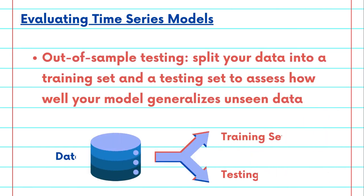Out-of-sample testing involves splitting your data into a testing set and a training set. This allows you to assess how well your model generalizes to unseen data.